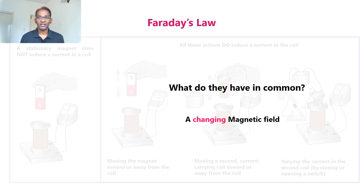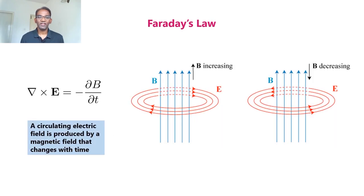They have a changing magnetic field. That means there is a relation connecting a changing magnetic field and current. That is exactly Faraday's law, which states that del cross E equal to minus ∂B/∂t. So ∂B/∂t is a changing magnetic field, meaning a changing magnetic field produces a circulating electric field. When we take del cross, that actually means the circulation of a particular function.